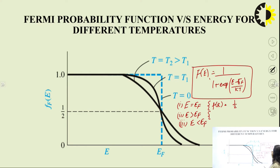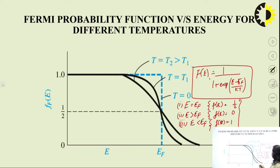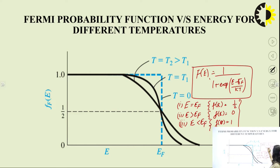When E is greater than E_f, it is a negative exponent and it gives f(E) = 0. Similarly, for E less than E_f, it is a positive exponent and f(E) = 1. So we have three cases: at E = E_f, half the state is filled with electrons and half with holes; for E greater than E_f, f(E) = 0; and for E less than E_f, f(E) = 1.